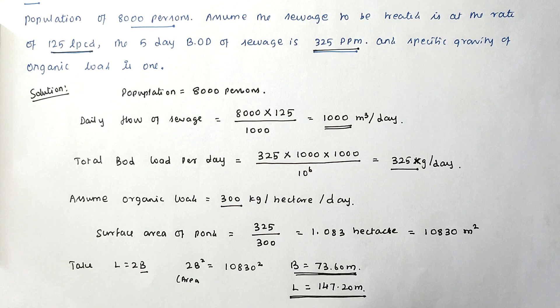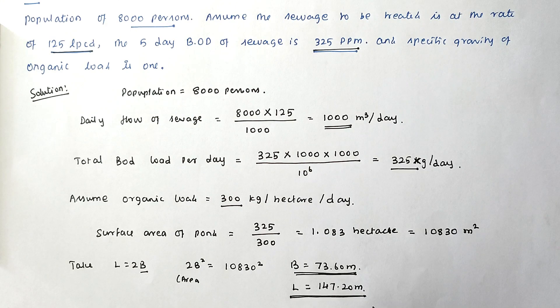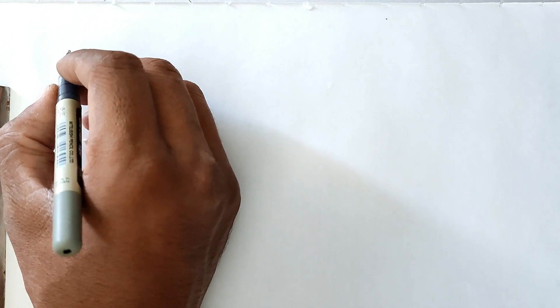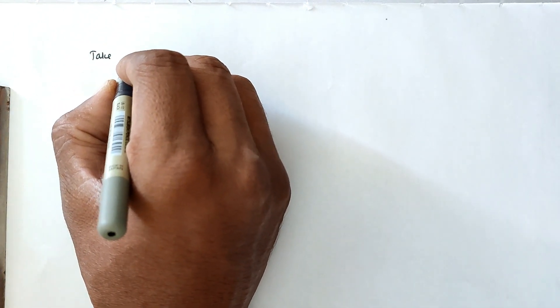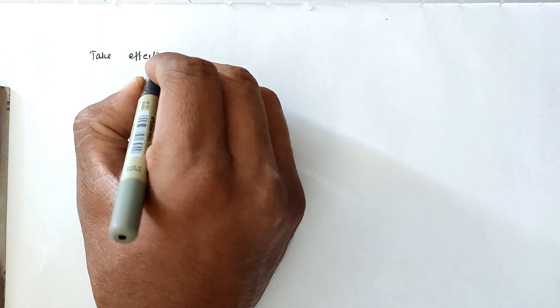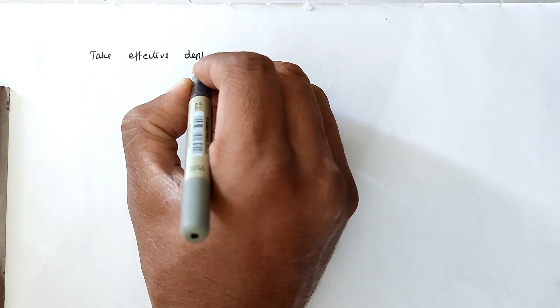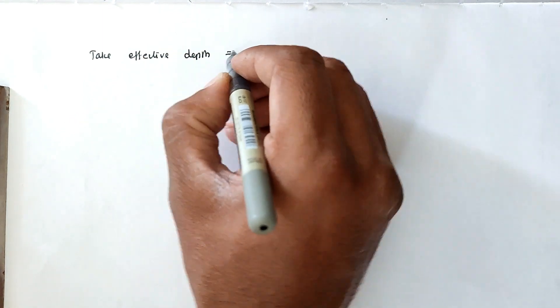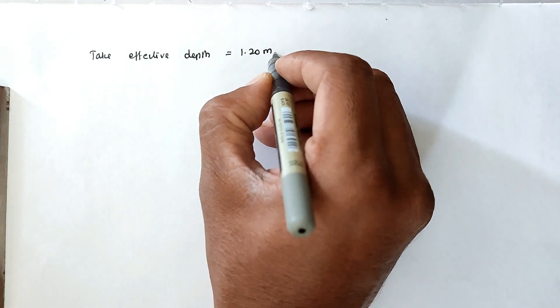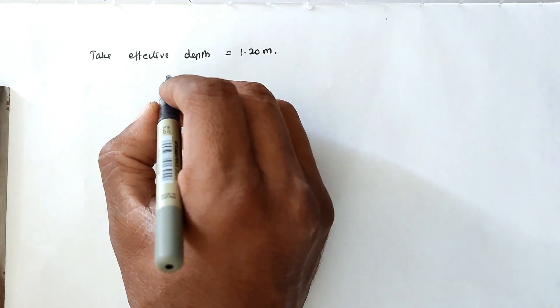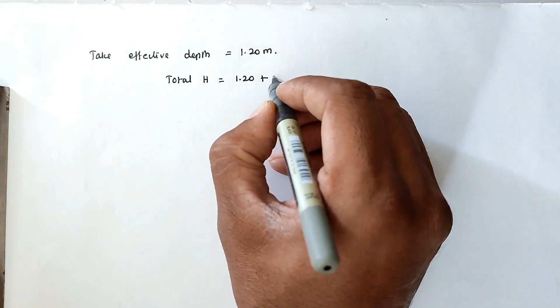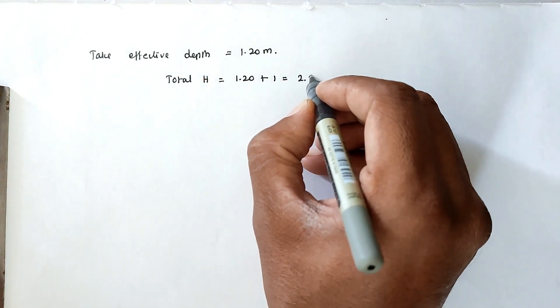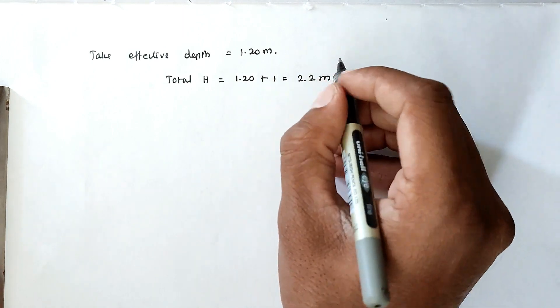Now we have to find out the depth as well as retention time. Now we can take the effective depth equal to 1.20 meter. Now the total height is equal to 1.20 plus 1 meter free board, 2.2 meter.